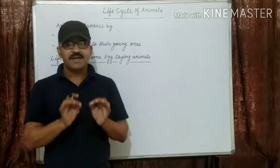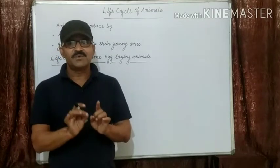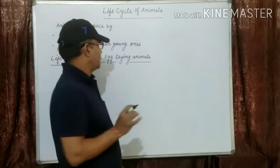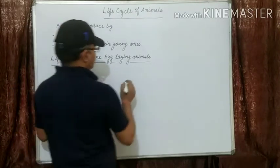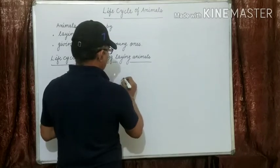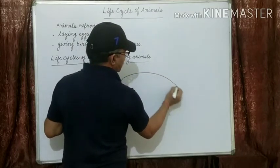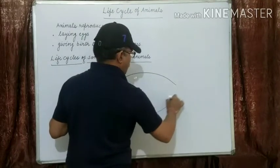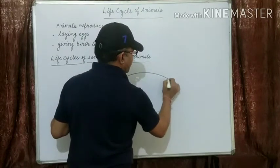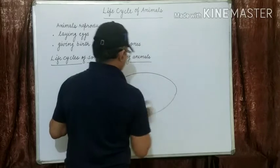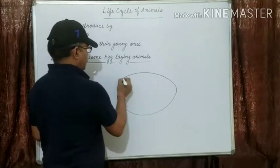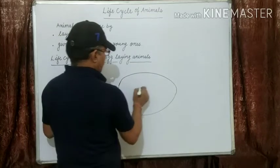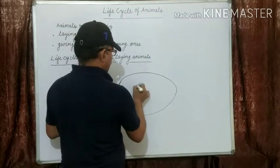Each egg has a hard but thin protective outer covering called the egg shell. Now let's look at the internal structure of the egg — inside the egg.